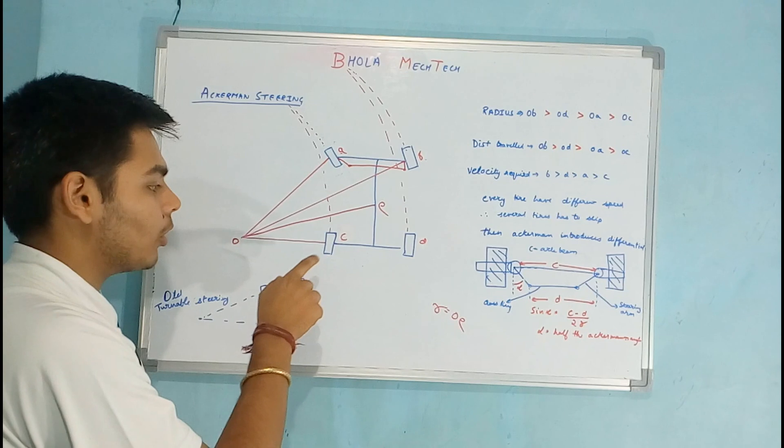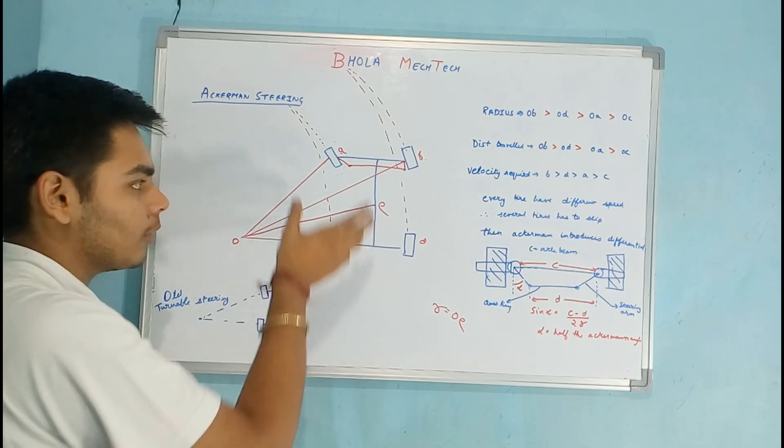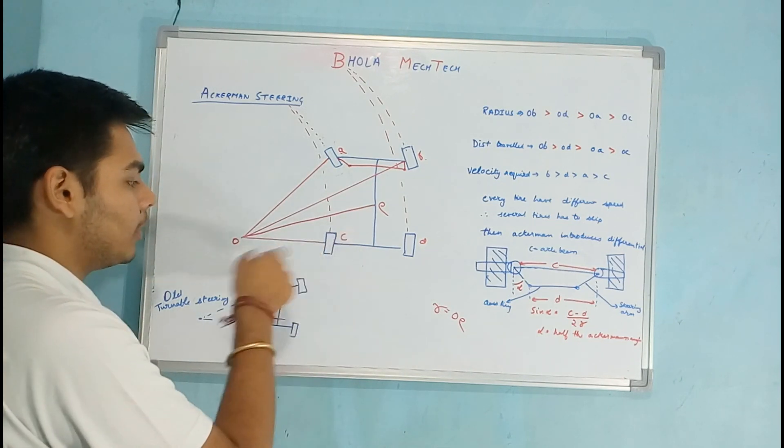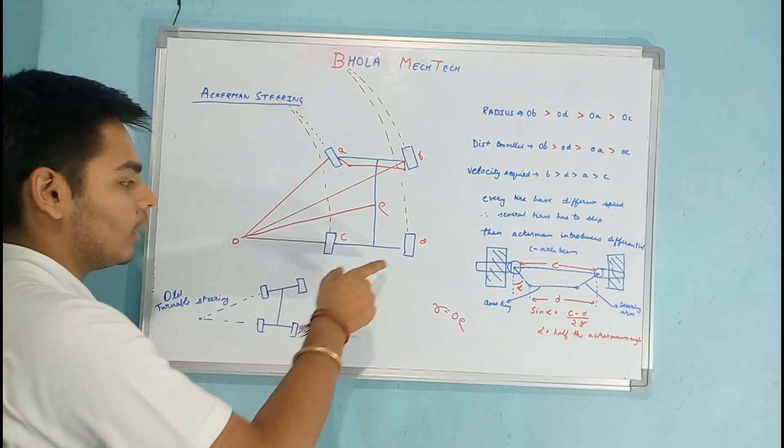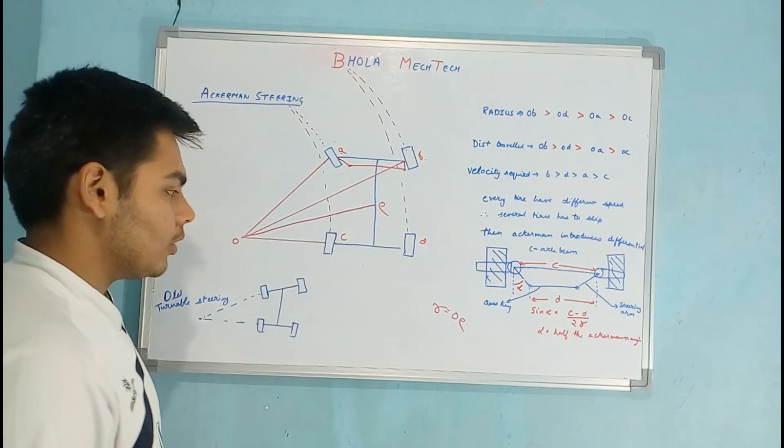So the vehicle wheel must be turning from at the line intersecting the rear wheels of the vehicle. At this point you can see the distance of B, the radius of B is longest and the radius of C is smallest.